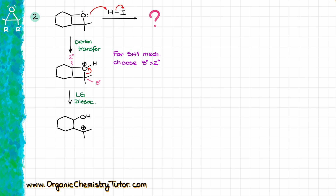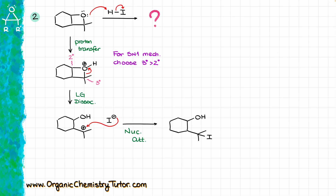Now that we have our carbocation, the next step is to take our nucleophile — iodide anion — and react it with the carbocation, giving us an alkyl halide as the product of this step. Just like in the previous case, we don't stop here. We continue because we still have an OH group and excess HI. So I'll protonate my OH with HI, making H₂O⁺ as the leaving group, which dissociates to give a corresponding secondary carbocation.